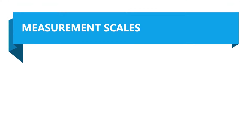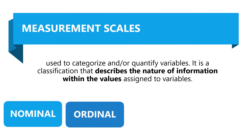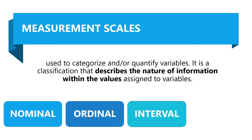Another method of classifying variables is by identifying their corresponding measurement scales. Measurement scales, also known as levels of measurement, are used to categorize and/or quantify variables. It is a classification that describes the nature of information within the values assigned to variables. There are four scales of measurement used in statistical analysis: nominal, ordinal, interval, and ratio scales.